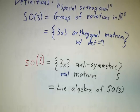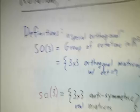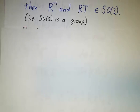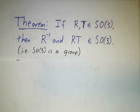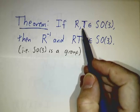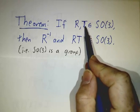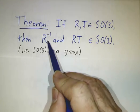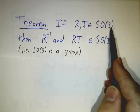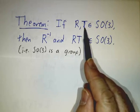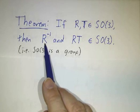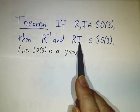So what is a Lie algebra and what is a group? A group is a set of elements such that whenever you multiply two of them, they're still in the group, and whenever you take the inverse of one of them, it's still in the group. SO(3) has this property: if R and T are rotation matrices, then R inverse is a rotation matrix, and R times T is a rotation matrix.